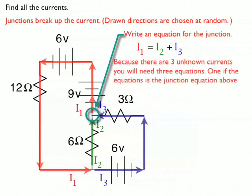Now remember, the junction is going to split up the current. So this gives me three currents, which means I'm going to need three equations to find out the right answer.